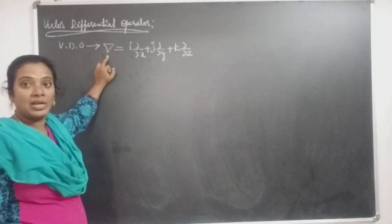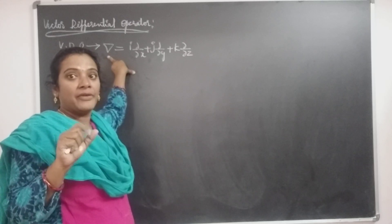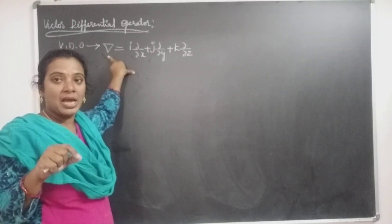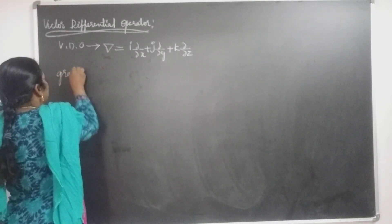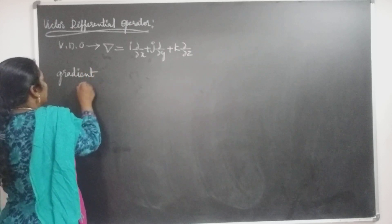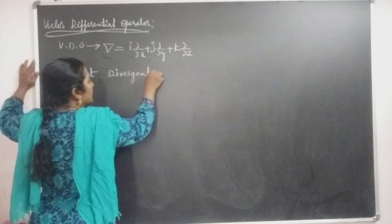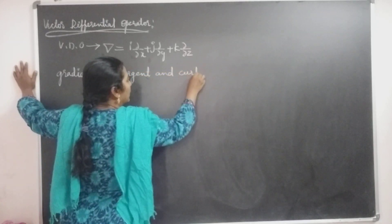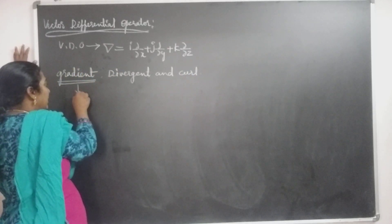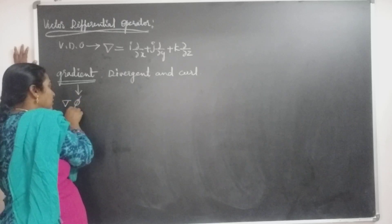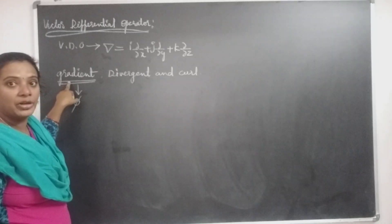By using this del operator, we can find out some quantities which are gradient, divergence, and curl. The gradient means we apply the del operator to a scalar point function, and that is called the gradient of a scalar point function.